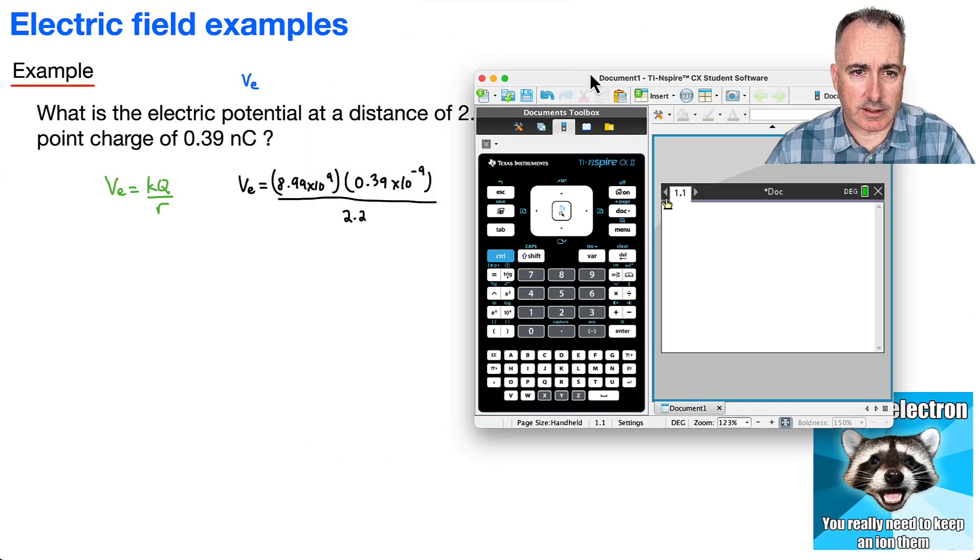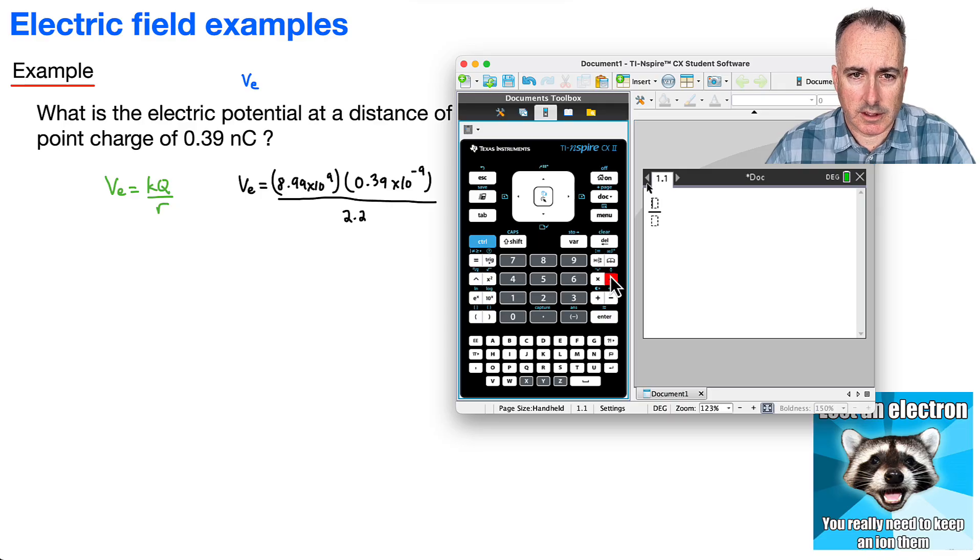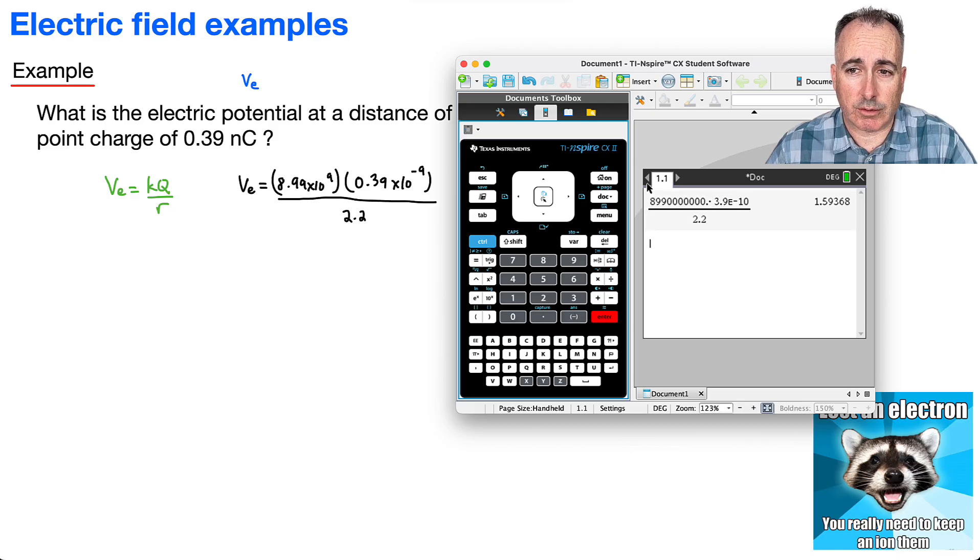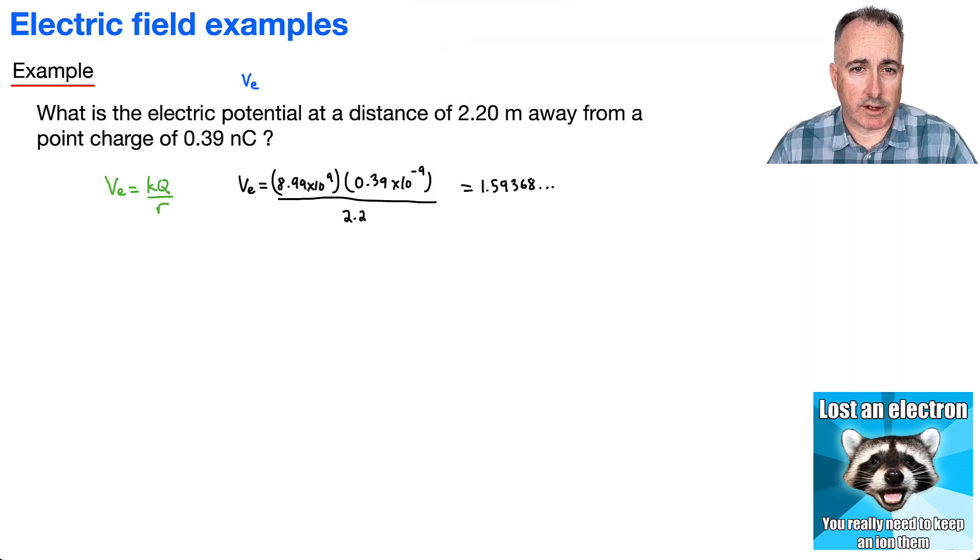All right, so if I do that, I'll just need a fraction here. It's going to be 8.99 times 10 to the 9, all that times 0.39 times 10 to the minus 9, all that divided by 2.2, and I end up with an answer of 1.59368.